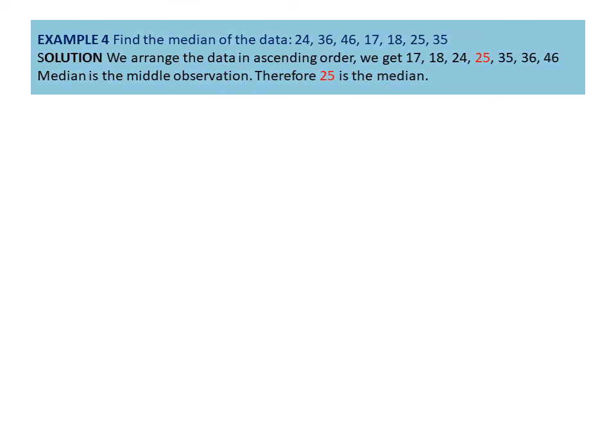Let us discuss one example. Find the median of the given data: 24, 36, 46, 70, 18, 25, and 35. First, we arrange them in ascending order and then find the middlemost observation. After arranging in ascending order, we get 25 as the middlemost observation — that is the median of the given data.